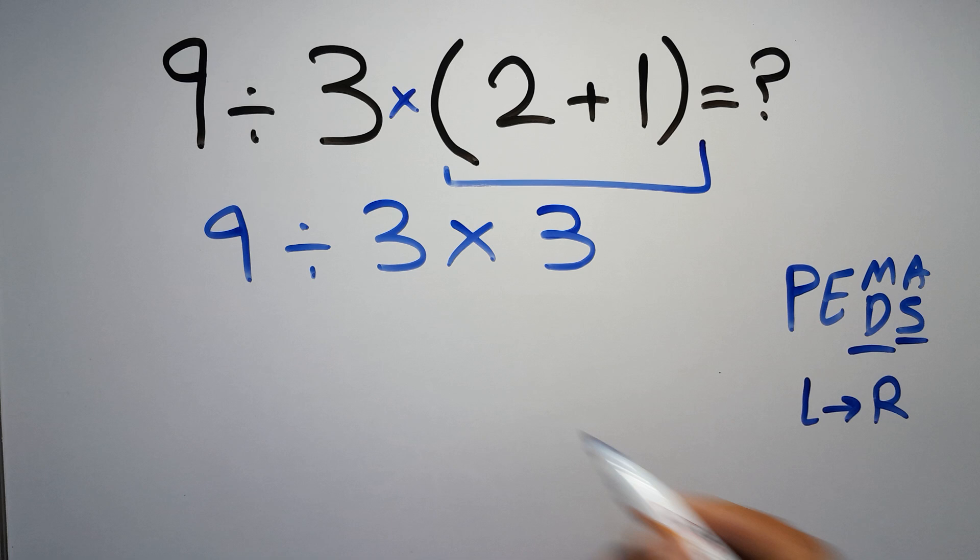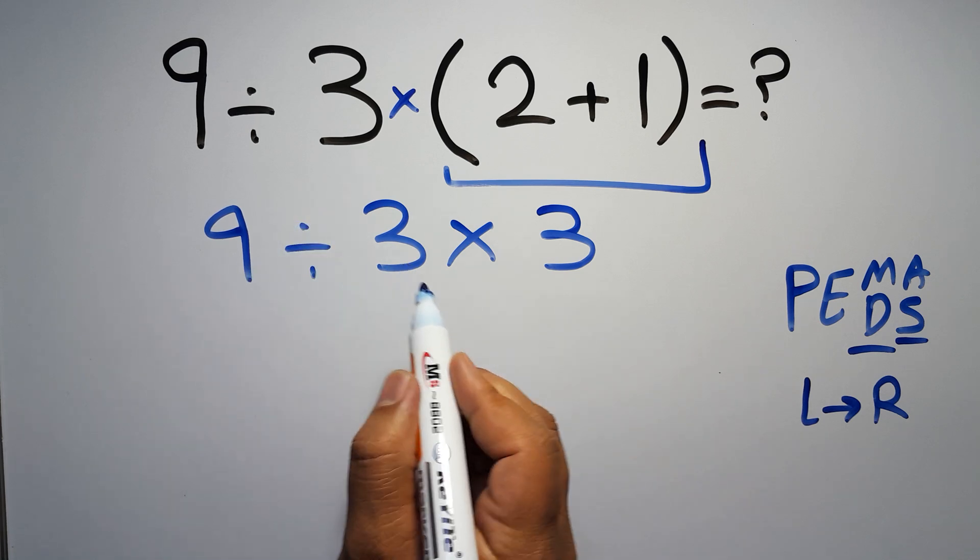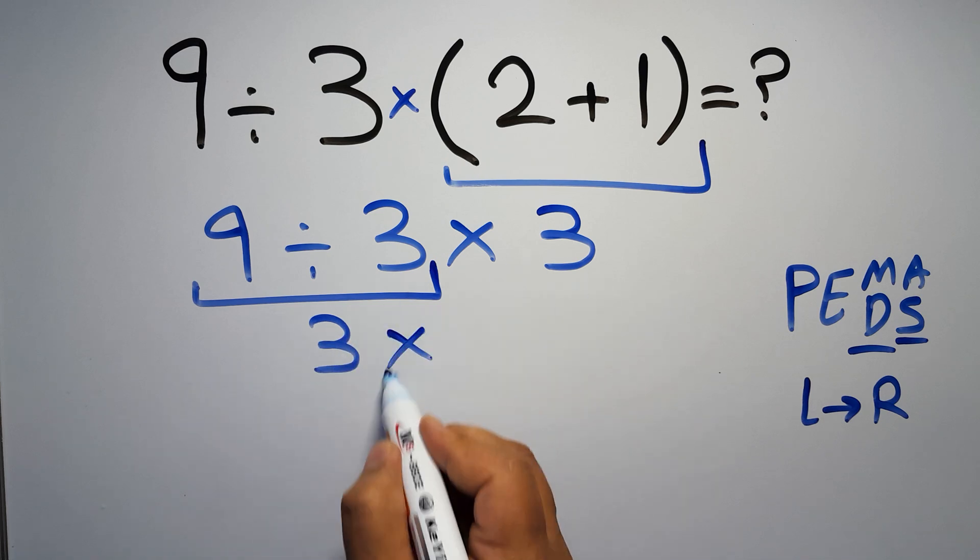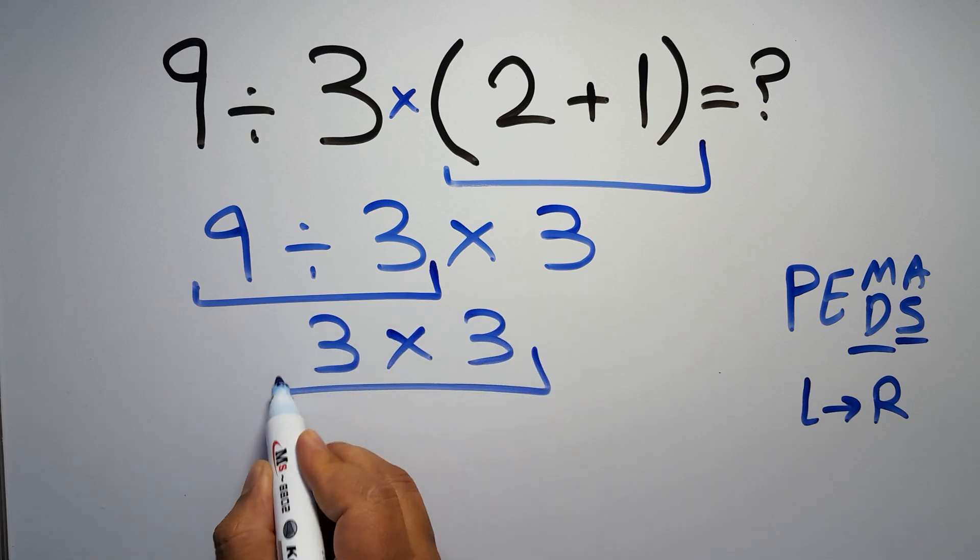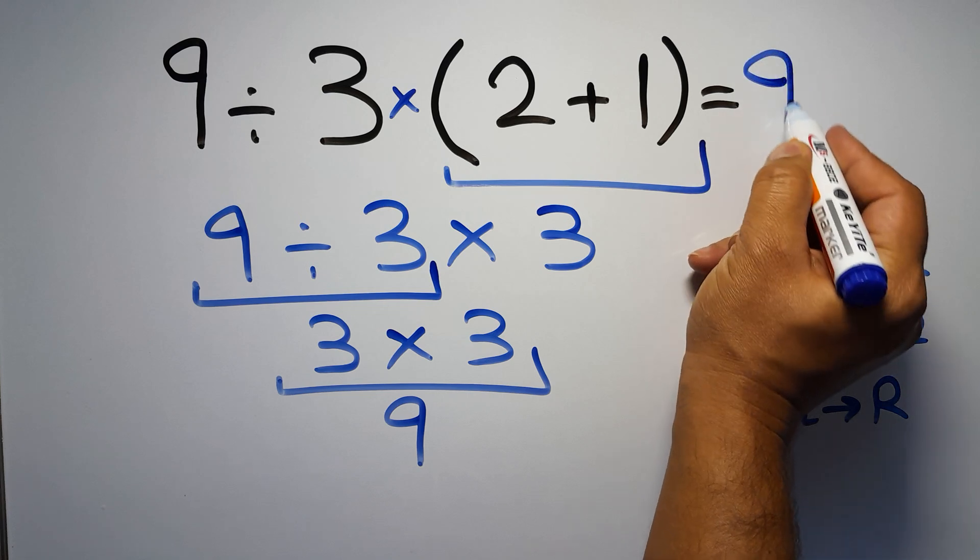left to right. So here, first we have to do this division: 9 divided by 3 gives us 3, so 3 times 3 which gives us 9. And this is our final answer to this problem. The correct answer is 9.